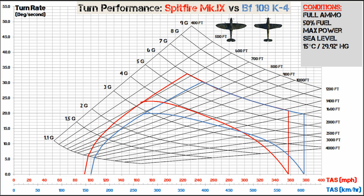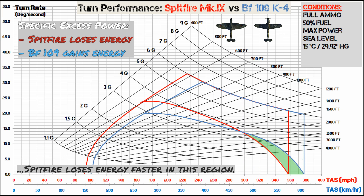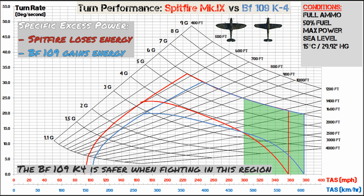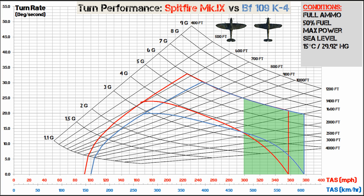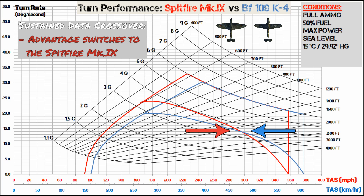Looking at specific excess power relative to each other: above 480 km/h, the K4's positive specific excess power is larger than the Spitfire's, meaning the 109 retains energy better in this region and the Spitfire loses energy faster. This makes it the region the K4 wants to stay in to fight the Spitfire, using its energy retention and extra airspeed for vertical components. The sustained turn lines cross over at around 480 km/h — approximately 300 miles an hour — and this is where the advantage switches from the K4 to the Mk9.